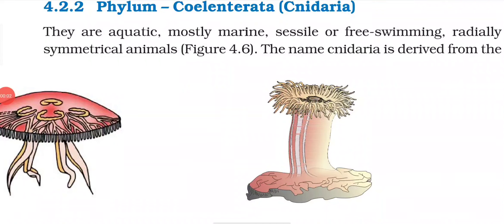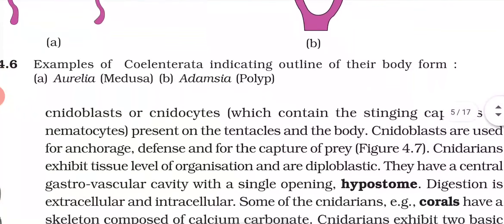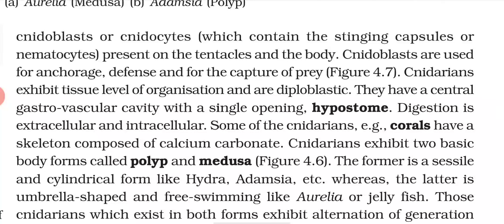Next we have the phylum Cnidaria, also called Coelenterata. They are aquatic, mostly marine, sessile or free-living, radially symmetrical animals. The name Cnidaria is derived from cnidoblasts or cnidocytes, which contain the stinging capsule or nematocysts present on the tentacles of the body.